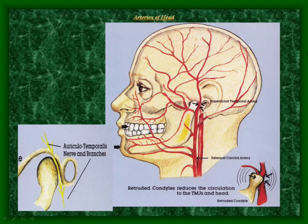TMJ is surrounded by arteries, such as the superficial temporal artery and external carotid artery. Retruded condylus, or compression and deformation, reduces the circulation of blood to the TMJ and head, causing headaches. It also affects the surrounding nerves, which includes the auriculotemporalis nerve and branches, causing sudden spasms.